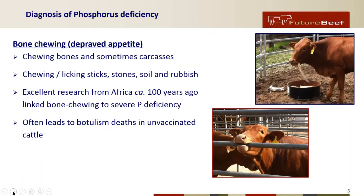Bone chewing is something everyone's pretty familiar with — it was established over a hundred years ago in Africa that bone chewing was linked to severe phosphorus deficiency. Of course, it's the primary cause of botulism deaths in unvaccinated cattle. That depraved appetite from phosphorus deficiency isn't just chewing bones — they'll chew sticks, stones, soil, and rubbish. Where people have old batteries and other rubbish around, that depraved appetite leads them to eating things they shouldn't, and poisonings can occur.